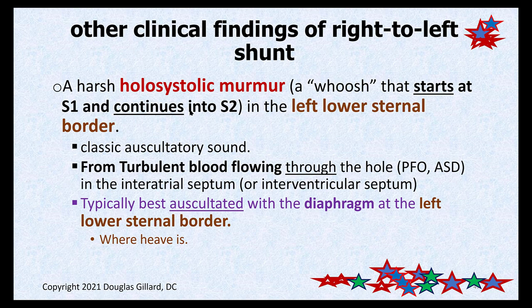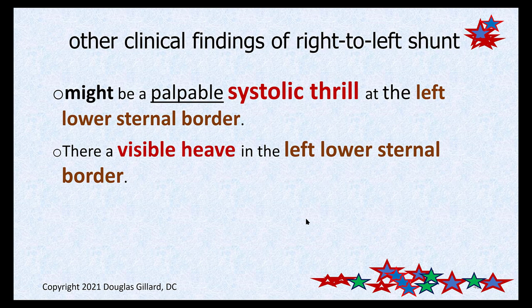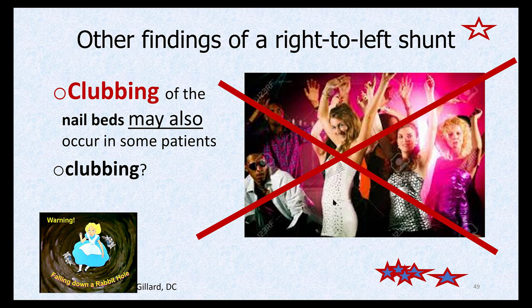Clinical findings include a holosystolic murmur that starts at S1 and goes to S2, heard at the left lower sternal border - the same place you might see a heave. The whoosh comes from turbulent blood flowing right to left. You should auscultate with the diaphragm since these are usually high-pitched noises. Old school, you might also palpate a thrill by placing the MCP joint over the left lower sternal border. So you may see a heave, palpate a thrill, and auscultate a holosystolic murmur - all signs of a dangerous right-to-left shunt through a PFO.